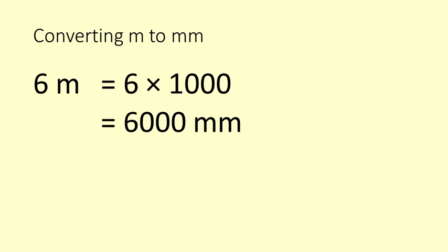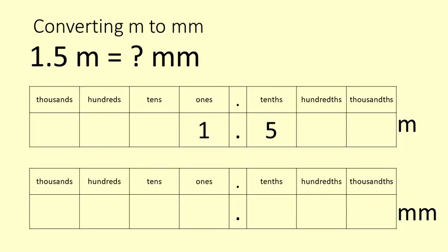Because of our base 10 system, we can just move the place of our number by 3 places. So if we have 1.5 metres, that's 1 whole metre and 5 tenths of a metre. And we multiply it first by 10, that becomes 15 metres. And then we multiply by another 10 and then by another 10.